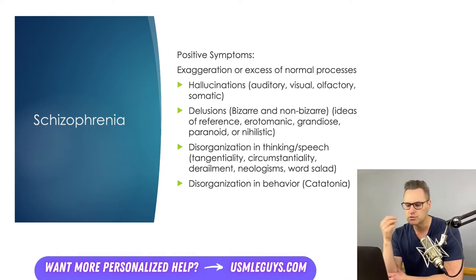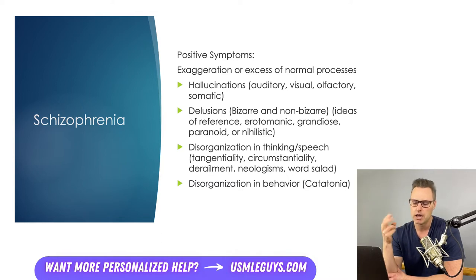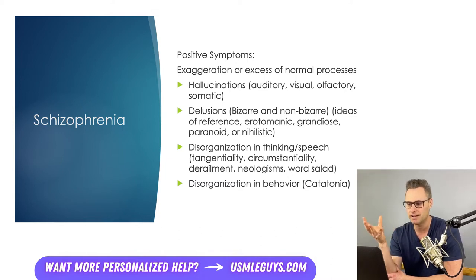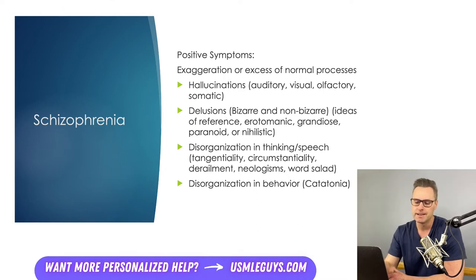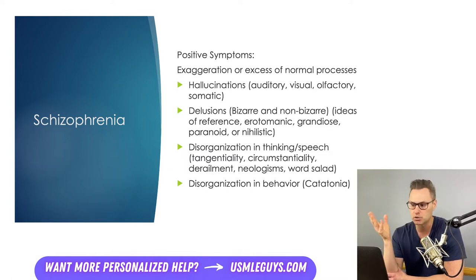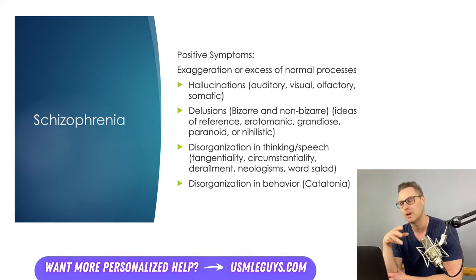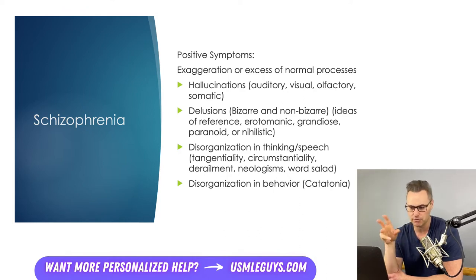Delusions are fixed false beliefs that persist despite indisputable evidence to the contrary. Delusions can be categorized as bizarre and non-bizarre. A bizarre delusion has no possibility of being true — for example, a race of aliens impersonating people to stop the patient from exposing them. A non-bizarre delusion is something that has the possibility of being true but is still unlikely, such as a patient believing they're being stalked by their high school teacher despite all evidence to the contrary. The content of delusions can also be characterized as ideas of reference, erotomanic, grandiose, paranoid, or nihilistic.